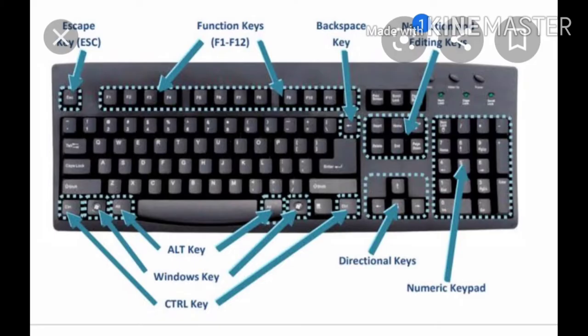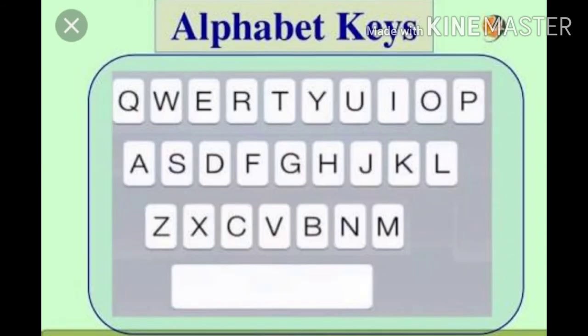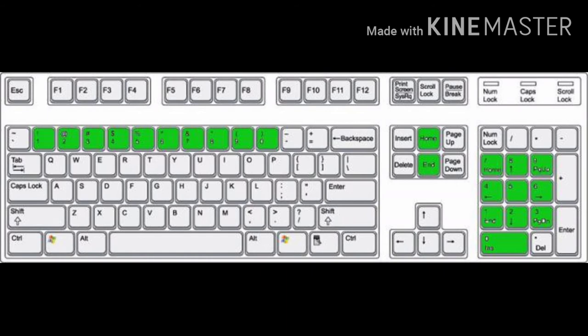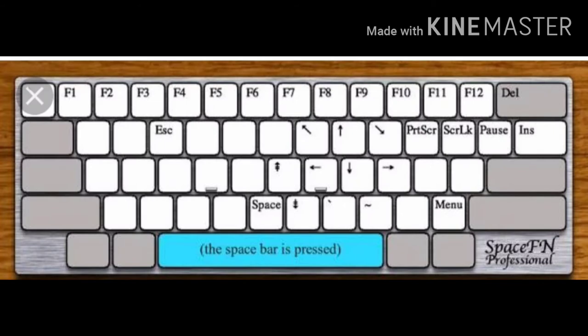A keyboard has 104 or more keys. Alphabet keys are used to type letters and words; there are 26 alphabet keys from A to Z. Number keys are used to type numbers; the number keys are from 0 to 9. The spacebar is used to give blank spaces between letters, words, and numbers.